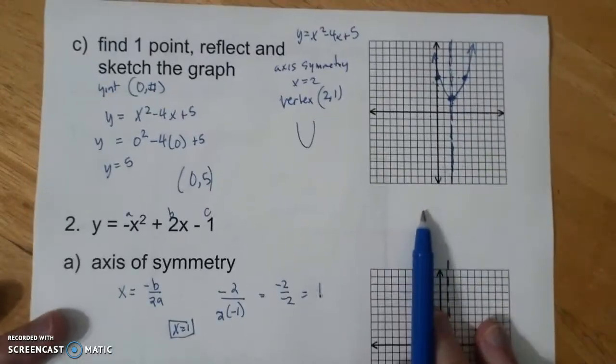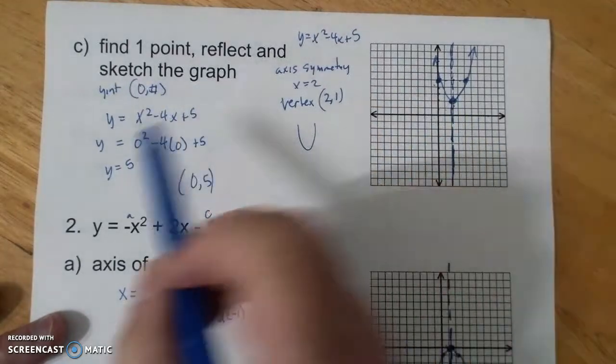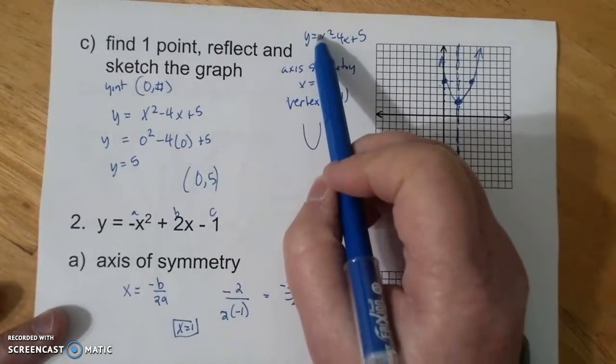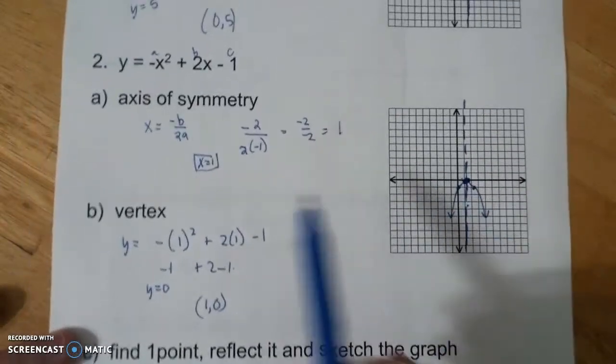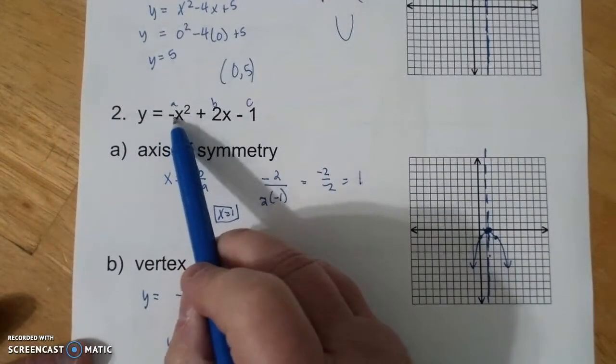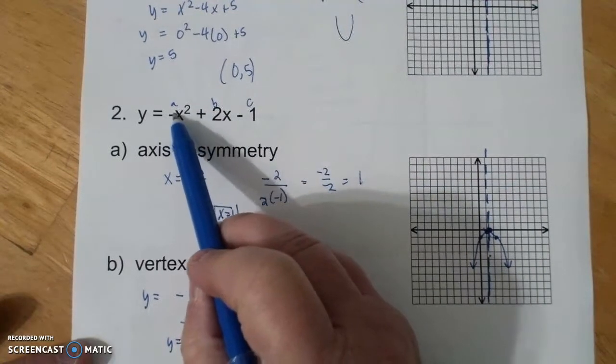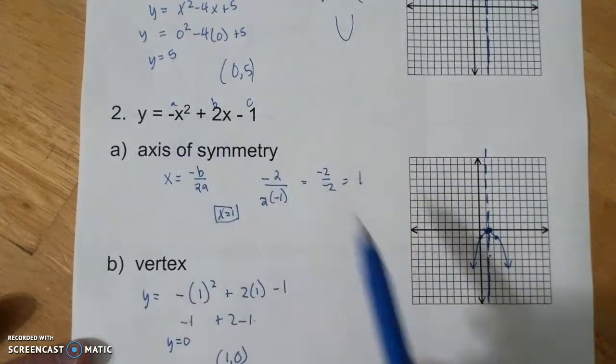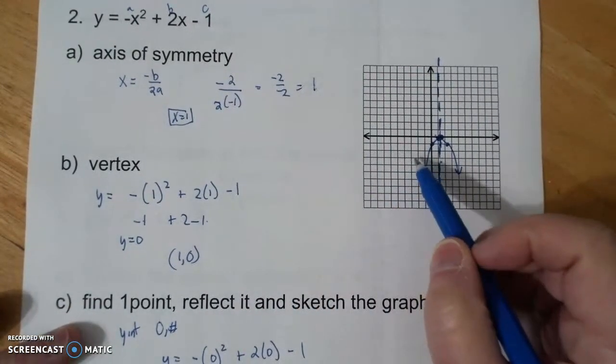Now, the other thing, notice that this guy was a U with a minimum. And this leading coefficient was positive. Notice this is y equals negative x squared plus 2x minus 1. And this is a negative, and here you go, negative coefficients make you sad.